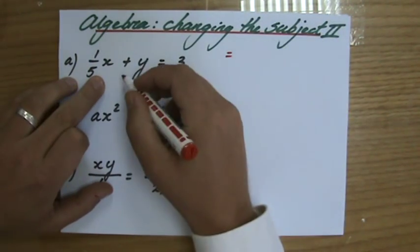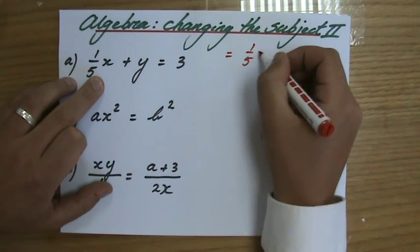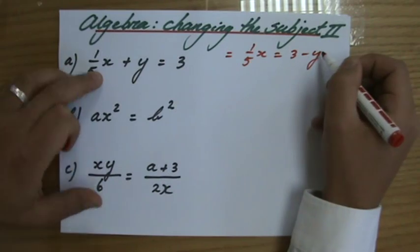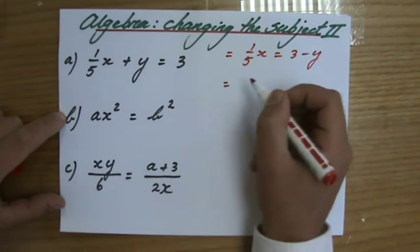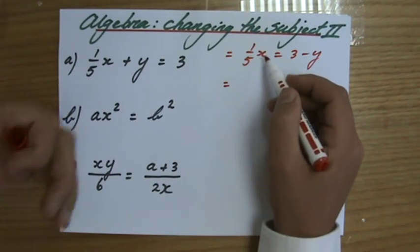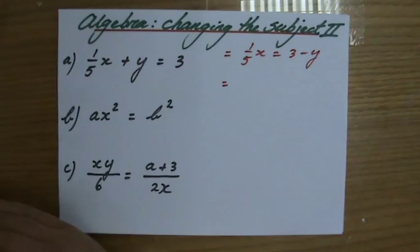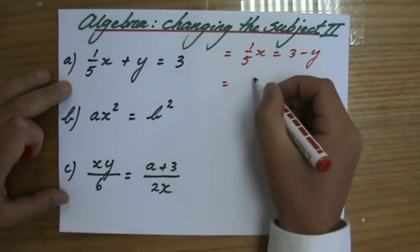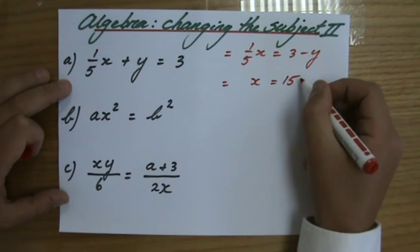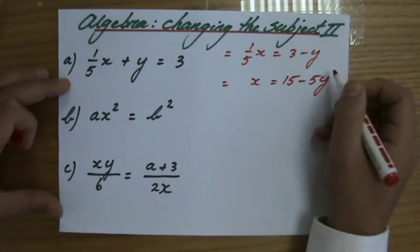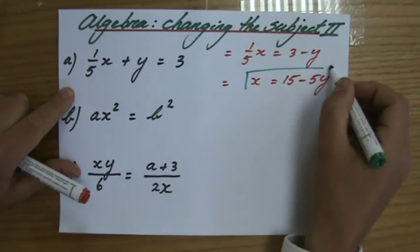For the first one, first I will take away y on both sides, so a fifth x equals 3 minus y. It's not really finished yet because it says a fifth of x, it should say 1x. So I divide everything by a fifth or times everything by 5, which is the same thing, for it to say x equals 15 minus 5y. Now that would be my answer. x now is the subject.